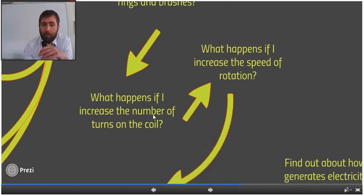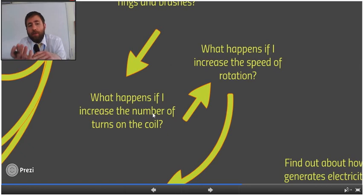Again, what happens if we have more turns? Well, more turns, you're going to get a higher voltage out. More turns, there's more wires, more electrons to be dragged, so higher voltage in total. What happens if we increase the speed of the rotation? Well, we get a higher voltage, but also something else happens. We also get a higher frequency. So if you think about one of our AC graphs.